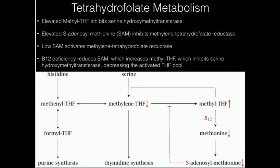Starting with methanol tetrahydrofolate — which can be made directly from tetrahydrofolate — it gets converted to methylene tetrahydrofolate. Methylene tetrahydrofolate can be used for thymidine synthesis (T bases in DNA). It can also be converted to methyltetrahydrofolate by the enzyme methylene tetrahydrofolate reductase, or MTHFR.